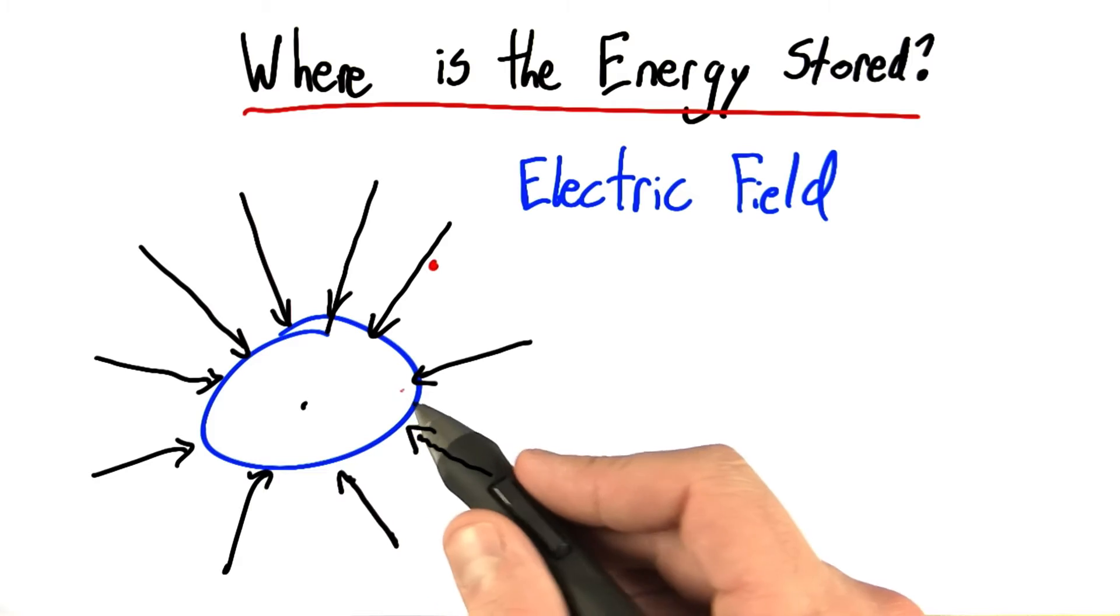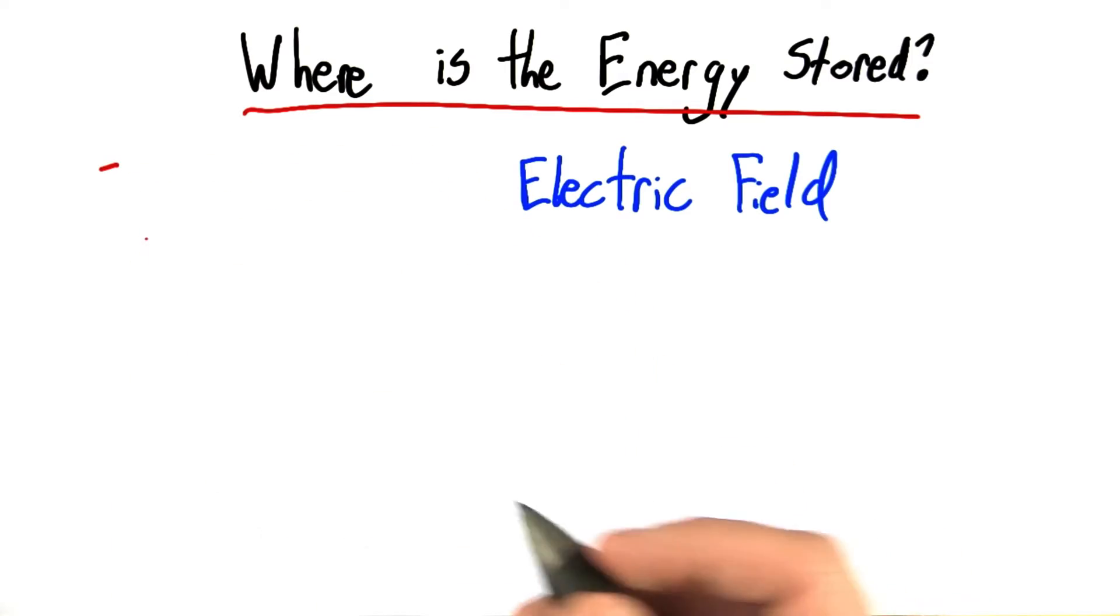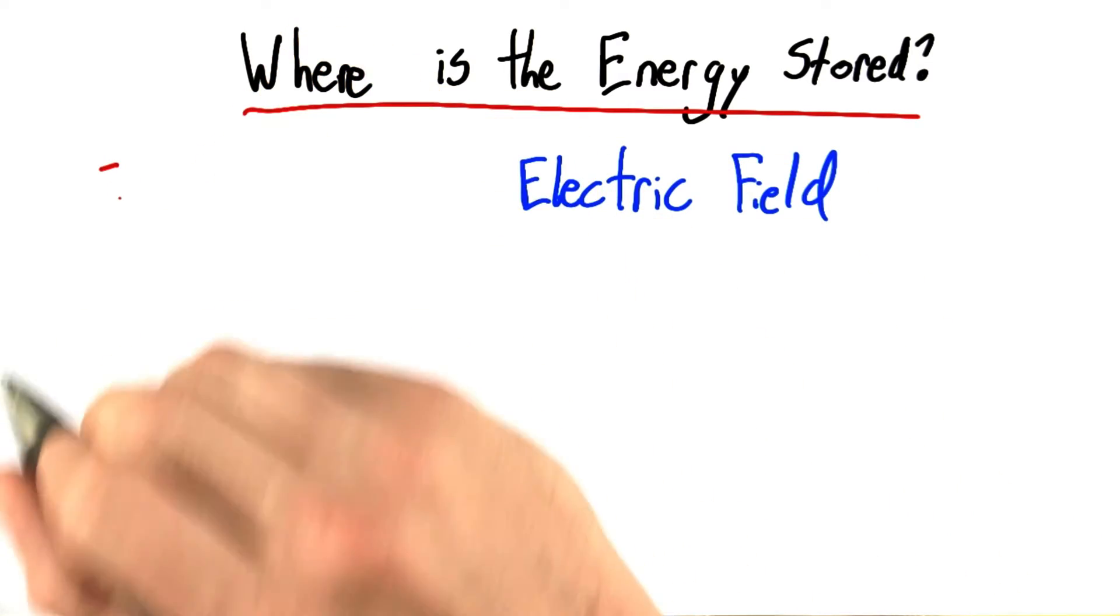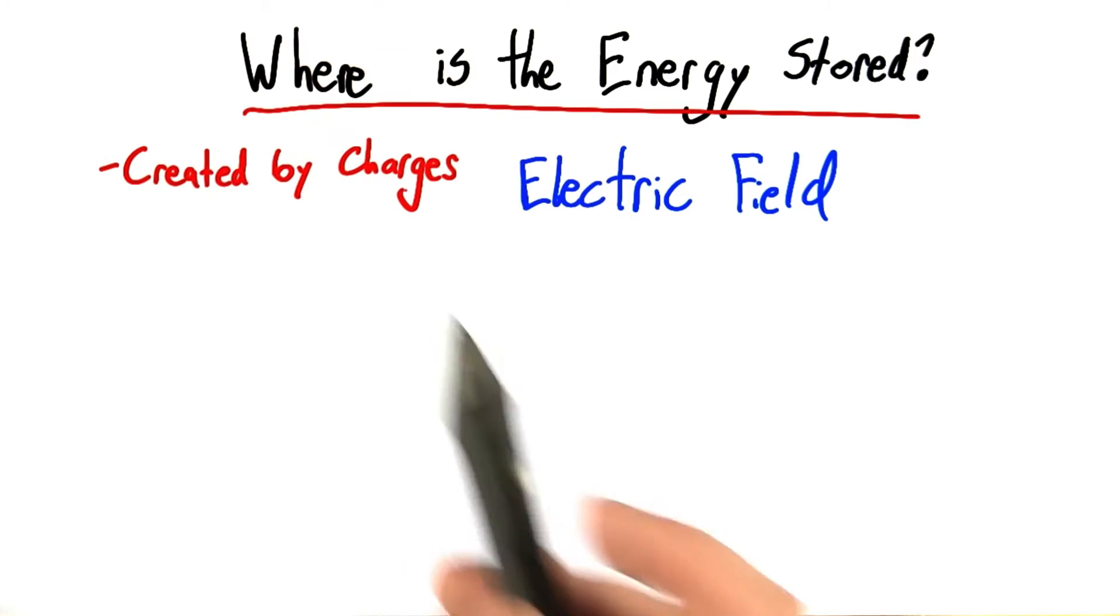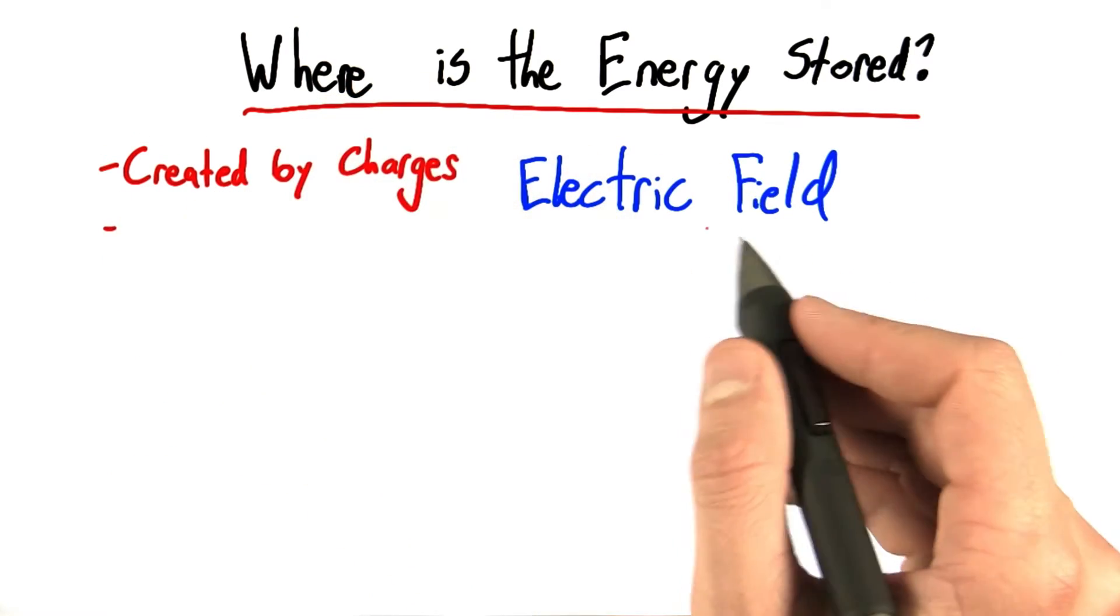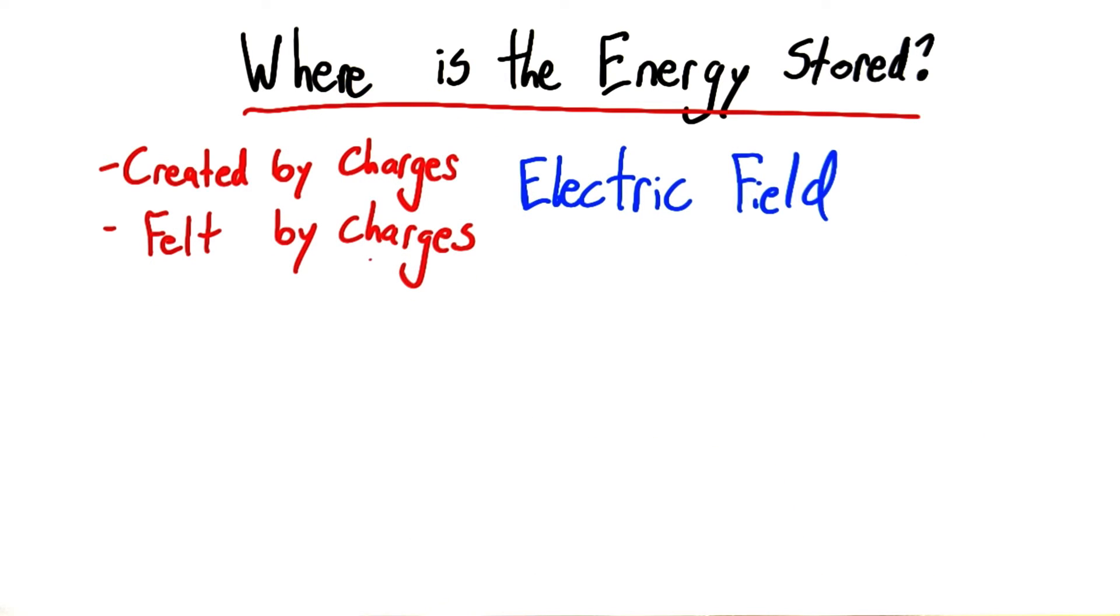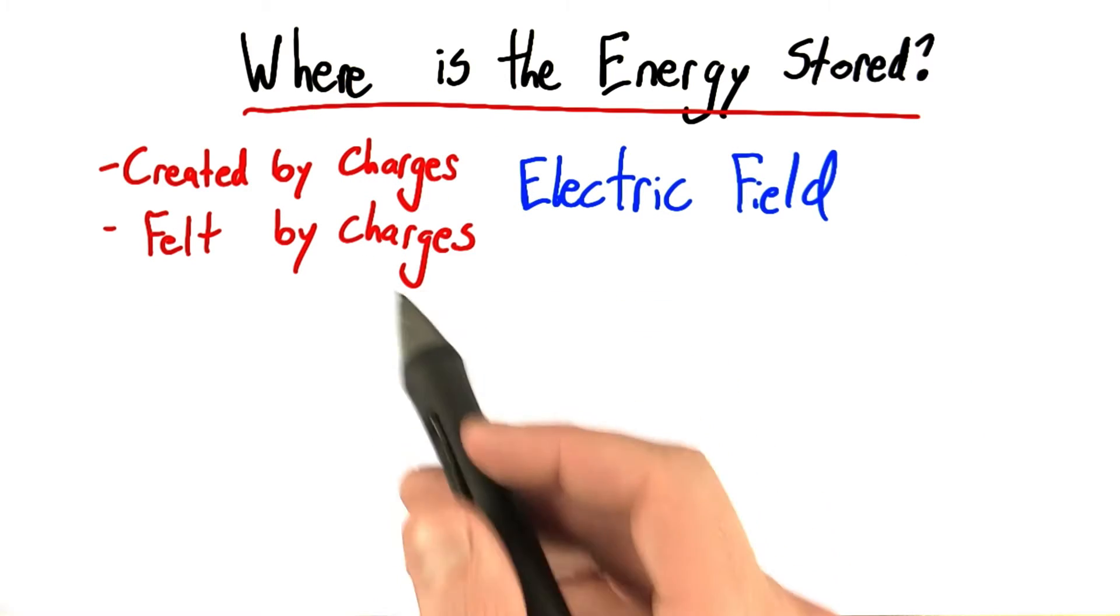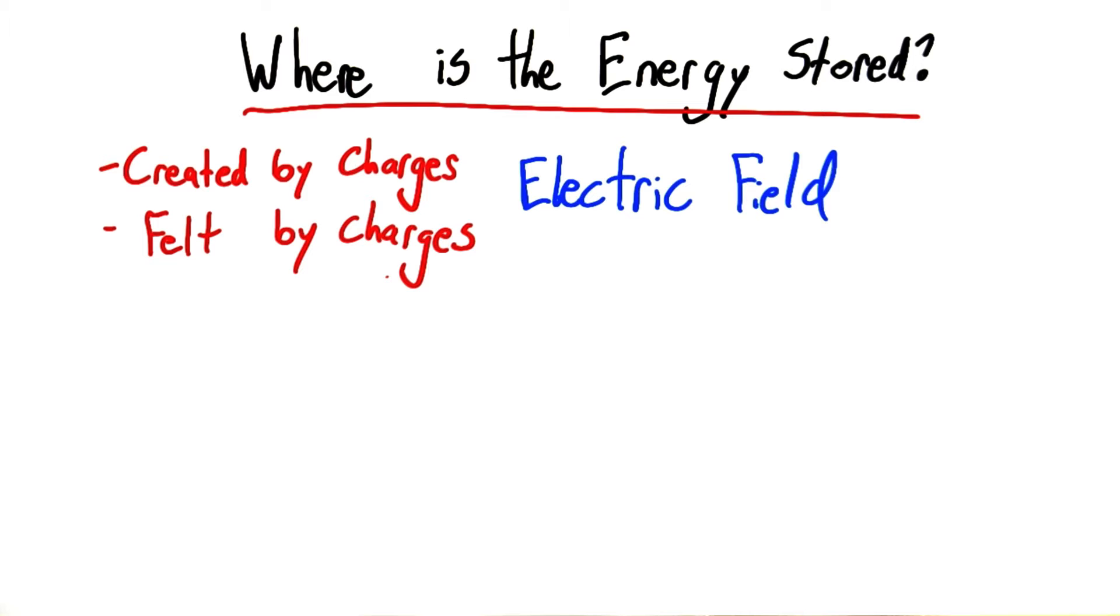The electric field is very similar. In the same way that gravity is caused by mass, electric fields are created by charges. And just as gravitational fields are felt by mass, electric fields are felt by charges. So both created and felt by objects with charge.